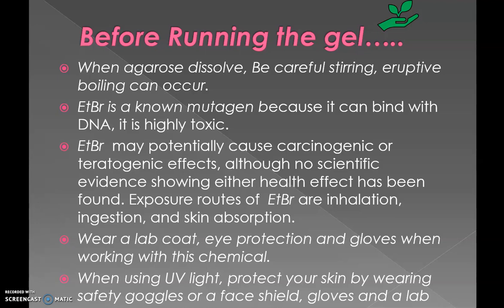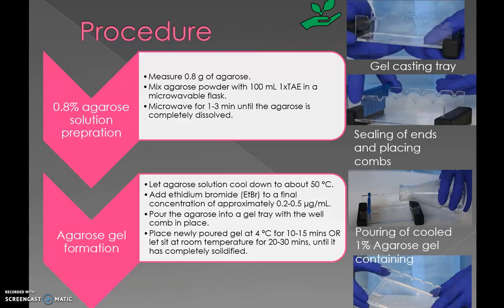Here is the basic procedure for running a DNA sample. We are making a 0.8 percent agarose solution, though you can prepare from 0.7 to 2 percent depending on your work. Measure 0.8 grams of agarose and mix with 100 ml of 1x TAE in a microwavable flask. Microwave for 1 to 3 minutes until the agarose is completely dissolved. Let the agarose solution cool down to about 50 degrees centigrade, then add ethidium bromide to a final concentration of approximately 0.2 to 0.5 microgram per ml. Pour the agarose into a gel tray with the comb in place, then set at 4 degrees centigrade for 10 to 15 minutes or at room temperature for 20 to 30 minutes until completely solidified.